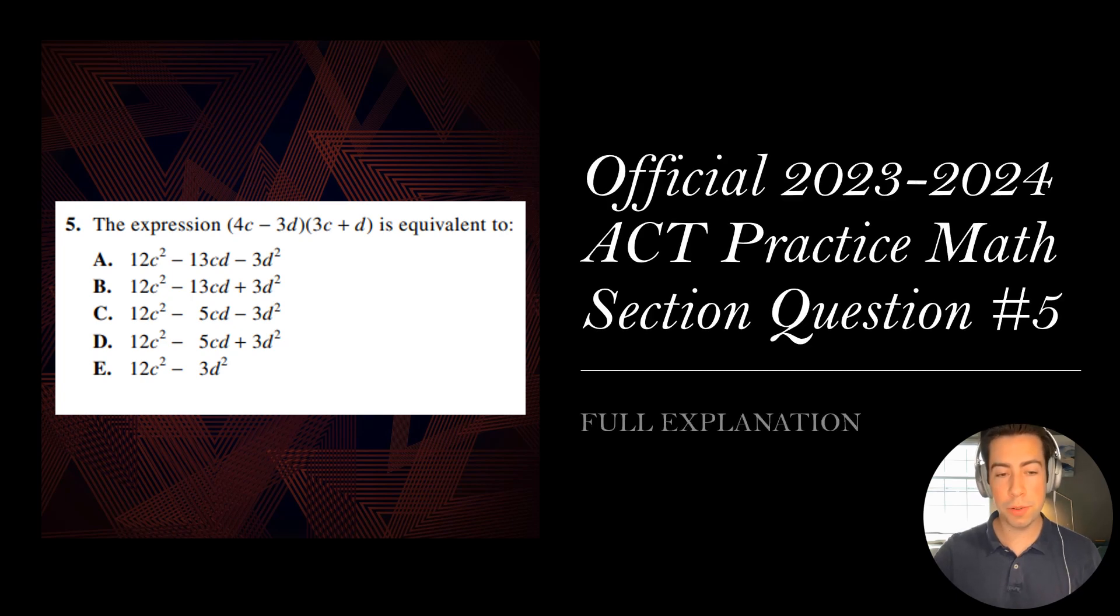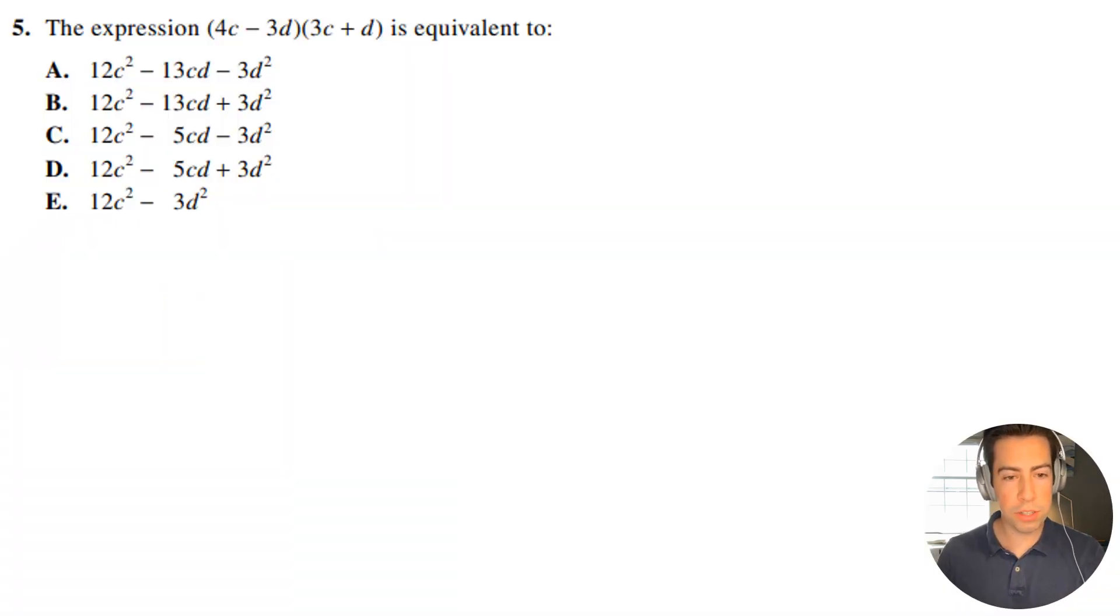All right guys, question number five, let's get right into it. So we have the expression 4c minus 3d in parentheses multiplied by 3c plus d in parentheses, is equivalent to, and they want us to simplify this expression.